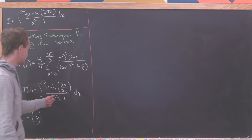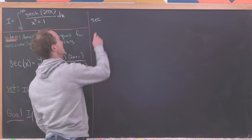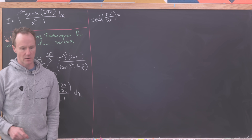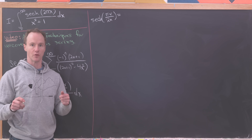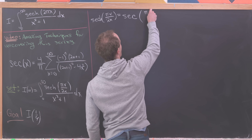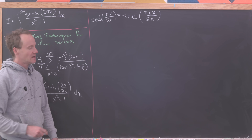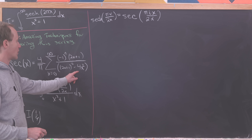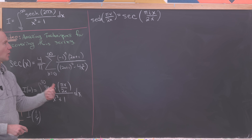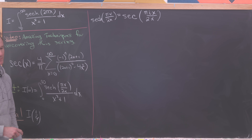Now let's look at the numerator: sech(πx / 2α). The hyperbolic secant is related to the normal secant by multiplying the argument by i, so sech(πx / 2α) = sec(πix / 2α). Since we're only squaring x in the expansion of secant, squaring the i just changes a minus to a plus, with some additional simplification inside the sum.